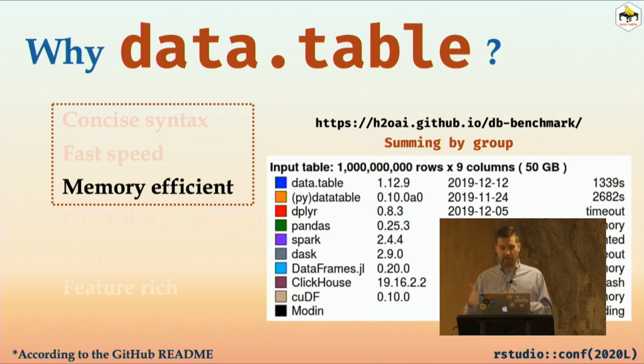This was an analysis done by Matt Dowle, the creator of data.table. This was with a huge data set. It might not be huge to some of you if you're working with a lot of flowing data. This one has a billion rows and nine columns. It's about 50 gigabytes of memory. He compared all these different frameworks. And for the most part, they either just ran out of time or couldn't even start. With data.table, it was able to accomplish a fairly complex summing by group request in a reasonable amount of time, too.